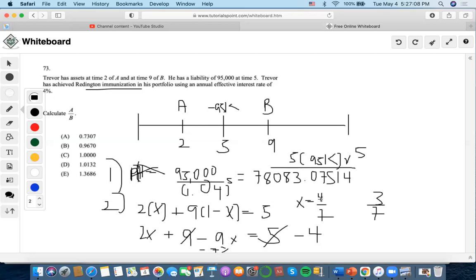Now let's solve for A. So we would have to multiply this by the present value. So we'll get 78,083.0754 times 4 divided by 7. We're going to do that and then we're going to accumulate it to time 2 to find out the value here. So times 1.04 to the 2. That will be 48,259.80233.